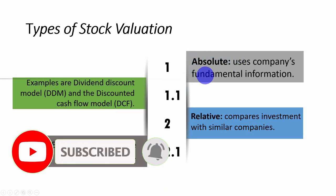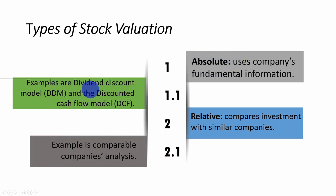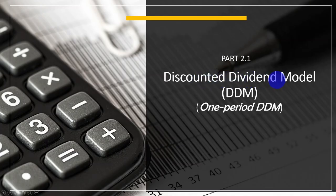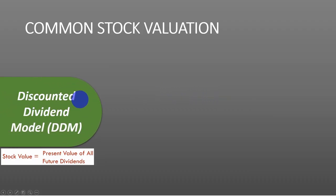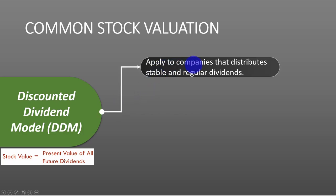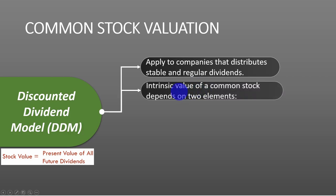We are going to start with the absolute stock valuation. We will look at the discounted dividend model. The dividend discount model has different types. We are going to start with the one-period dividend discount model. The discounted dividend model has to do with finding the present value of all future dividends that you earn from the stock — you discount them back to present. It applies to companies that distribute stable and regular dividends.